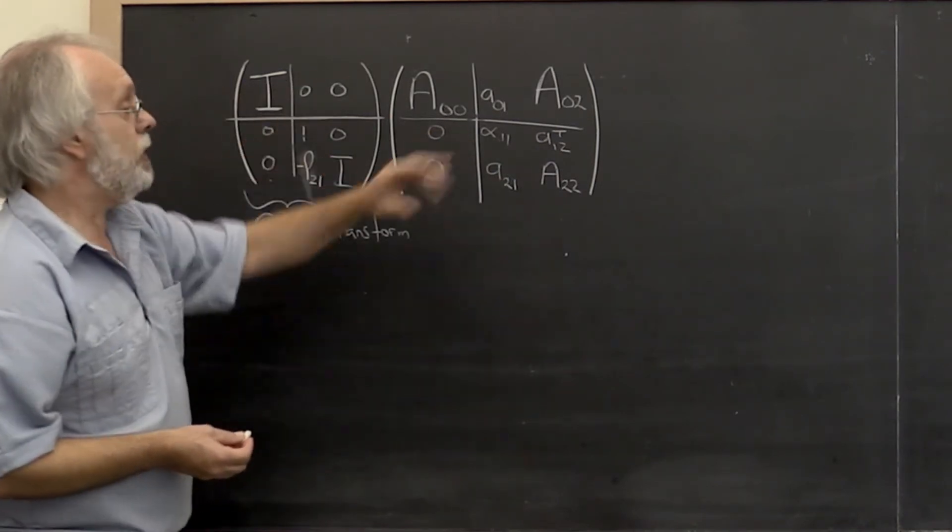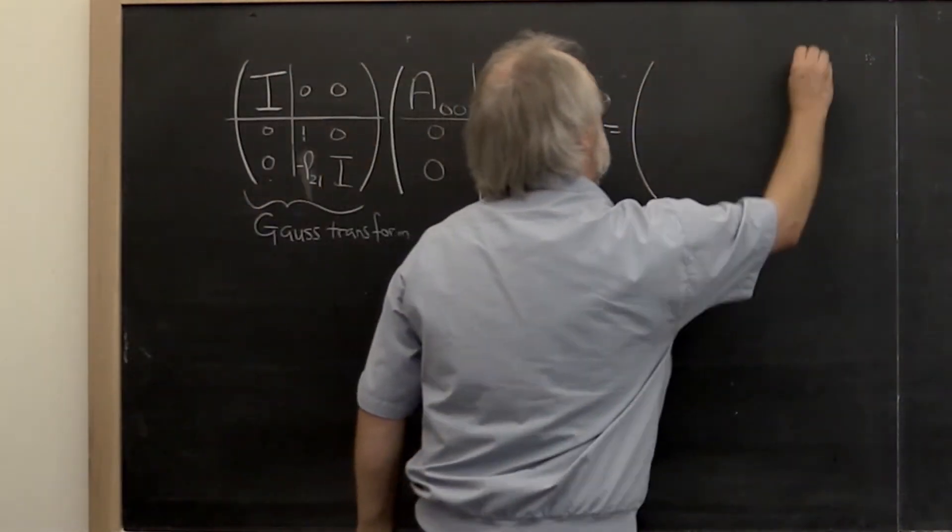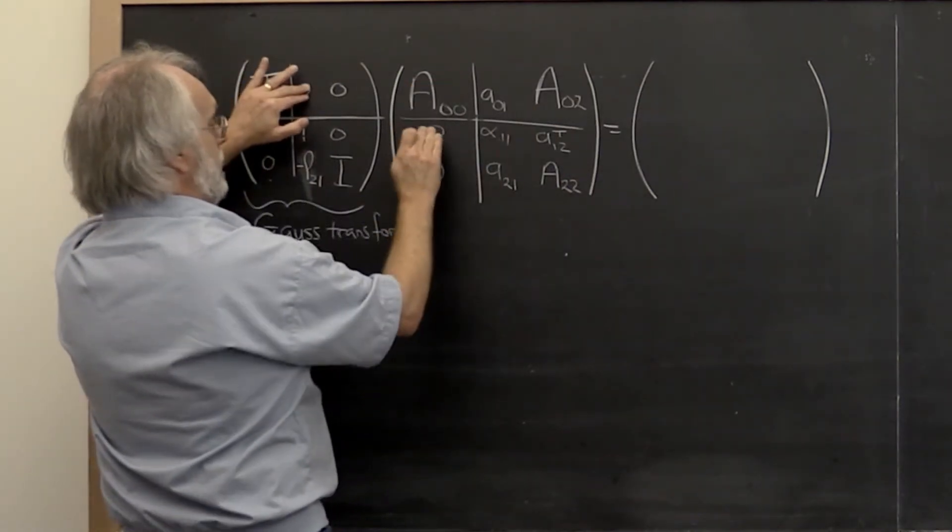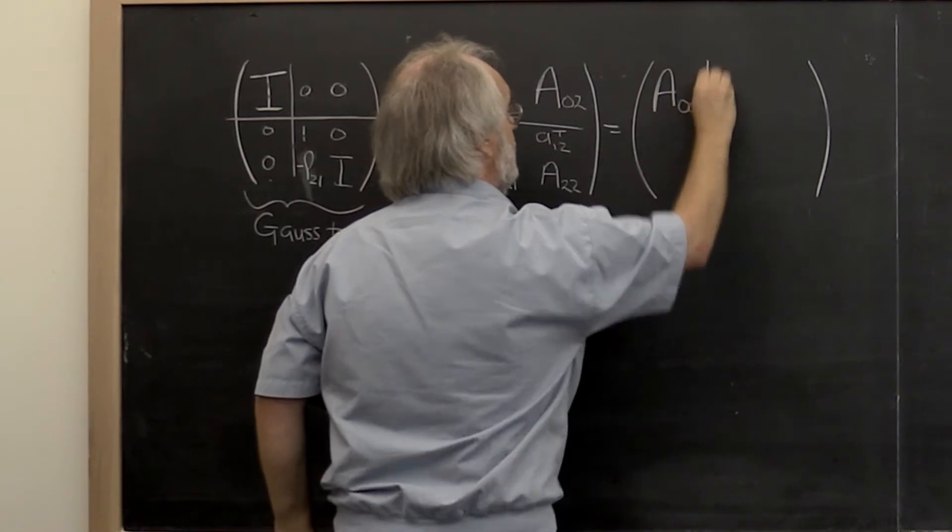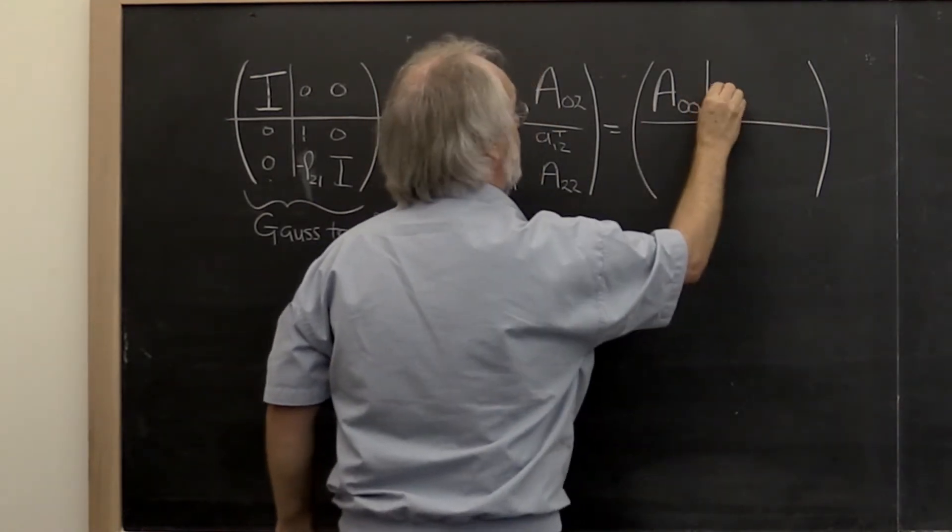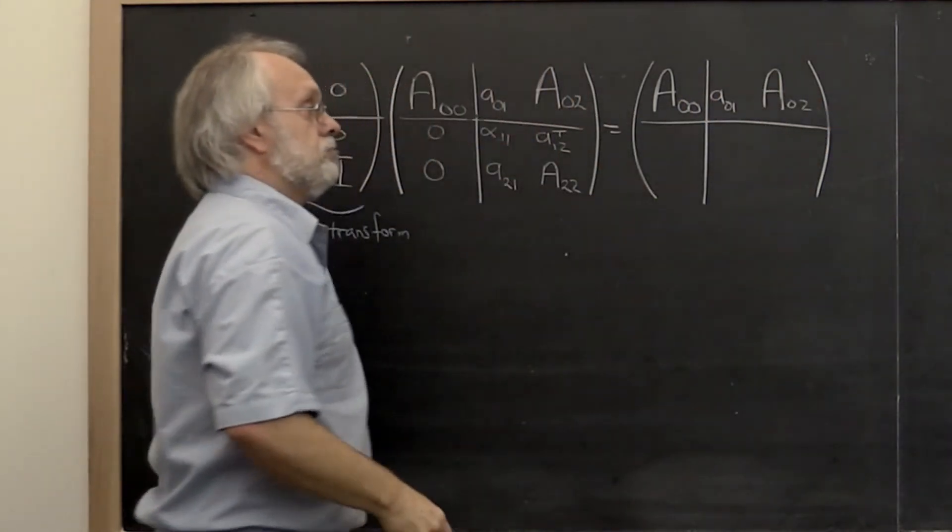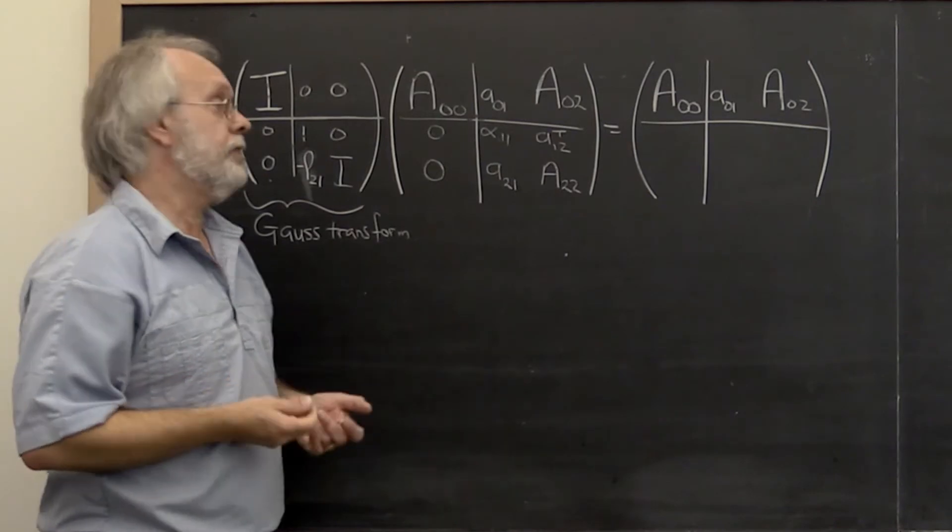Let's multiply this out. This first matrix is this times that plus this times that plus this times that. So we get A00 here. And by similar reasoning we get A01 and A02 here. The first rows, the rows that we've already processed are left alone.